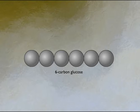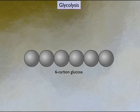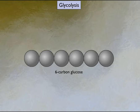Cells derive energy from the oxidation of nutrients such as glucose. The oxidation of glucose to pyruvate occurs through a series of steps called glycolysis. The energy released during these oxidation reactions is used to form adenosine triphosphate, ATP, the energy currency of the cell.